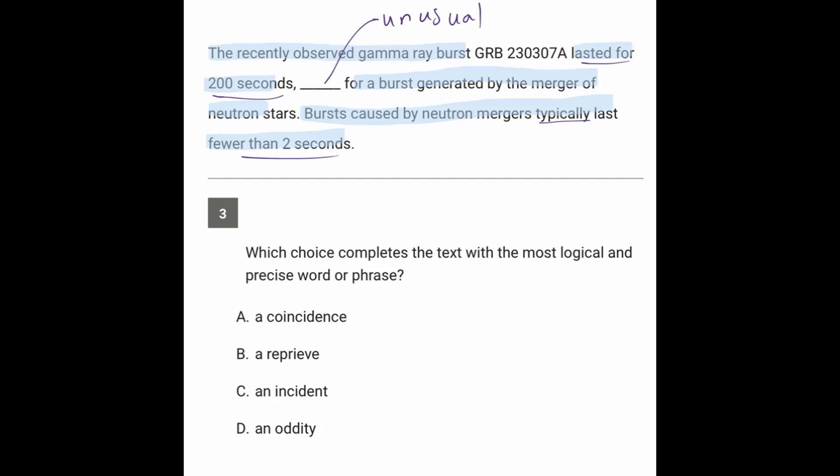So which answer might match that? A says a coincidence, which is different than being unusual. A reprieve is like a break from something, a break from the norm or a break from stress, which is different.